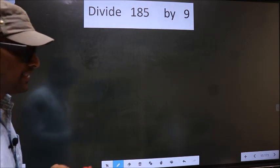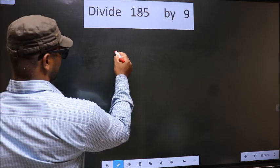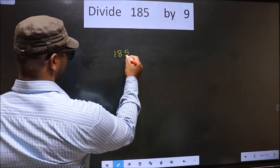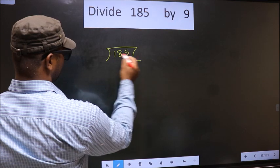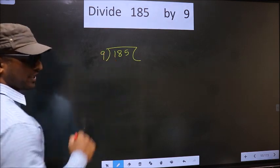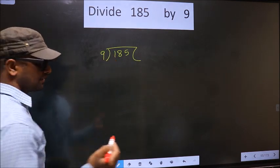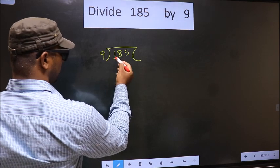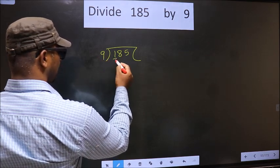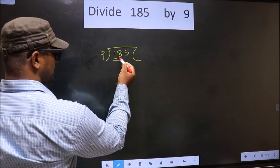we should frame it in this way. That is 185 divided by 9. Now here we have 1. 1 is smaller than 9, so we take 2 numbers, that is 18.